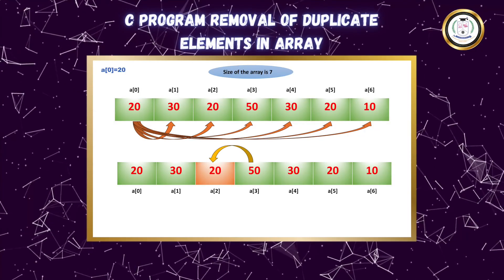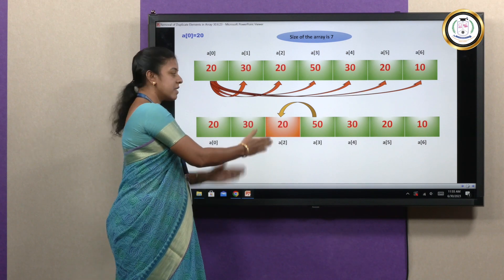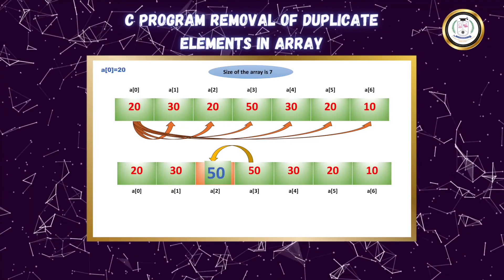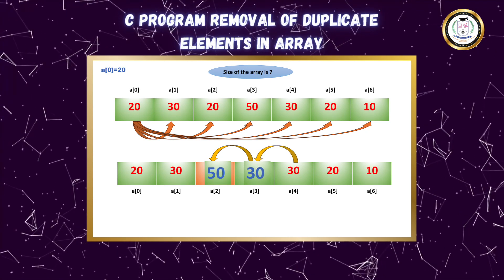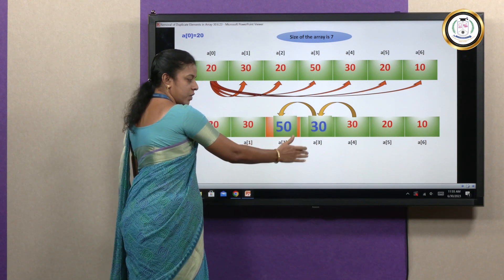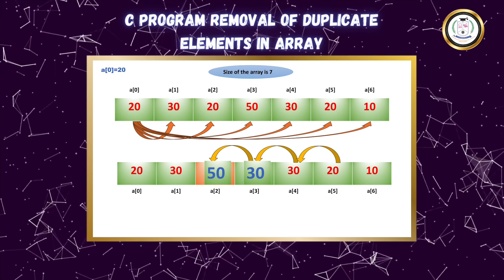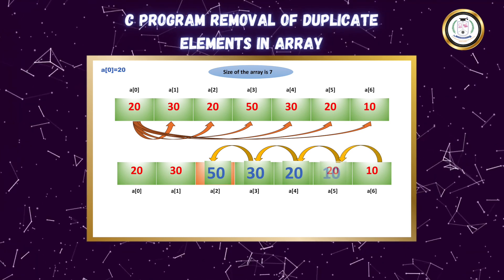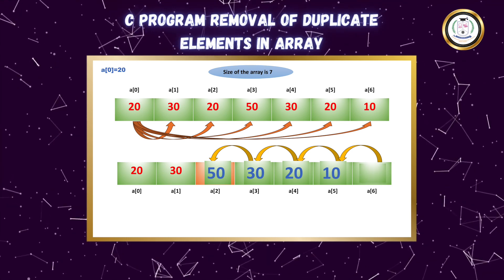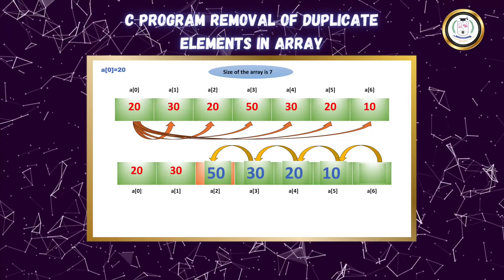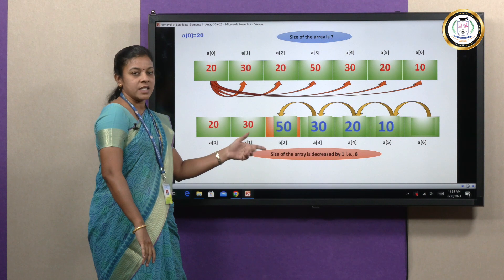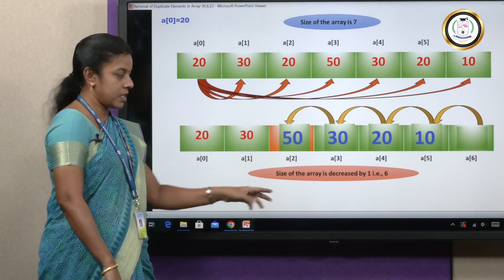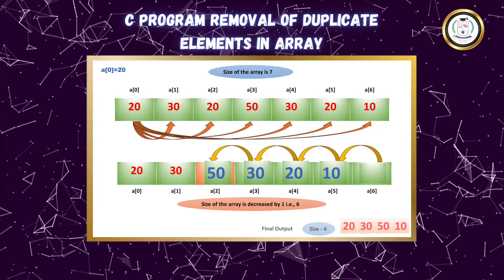This duplicate 20 should be deleted. We replace it with all the other elements to its right — 50 moves to the third location, 30 moves to the fourth, 20 moves one step left, and 10 moves to the fifth position. There will be no element in the last position. At this stage, the size of the array decreases by one, from 7 to 6. This step keeps continuing until only unique elements remain.